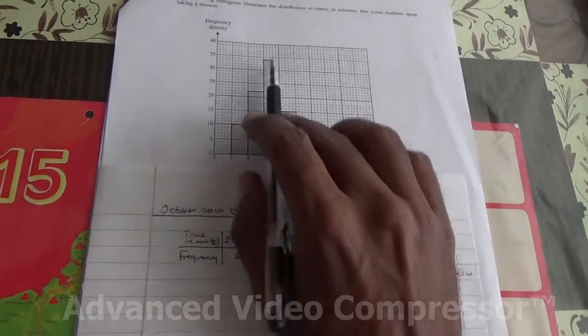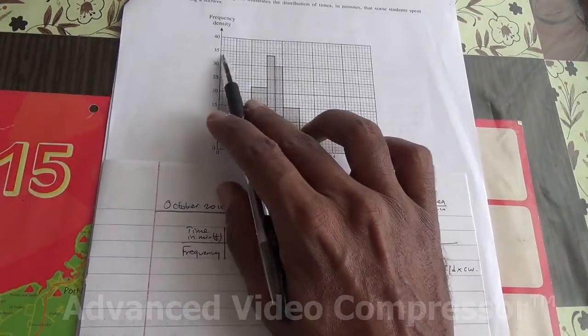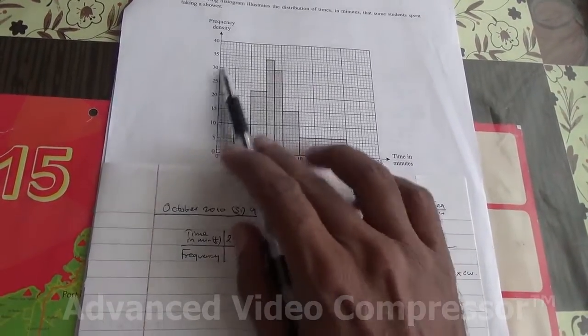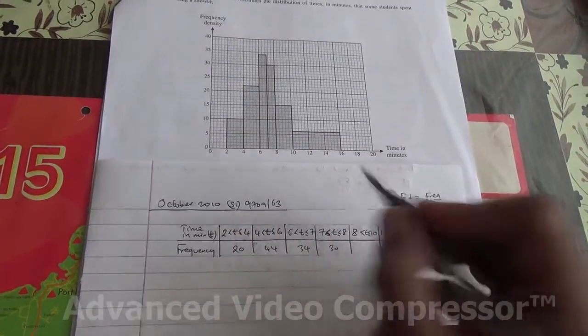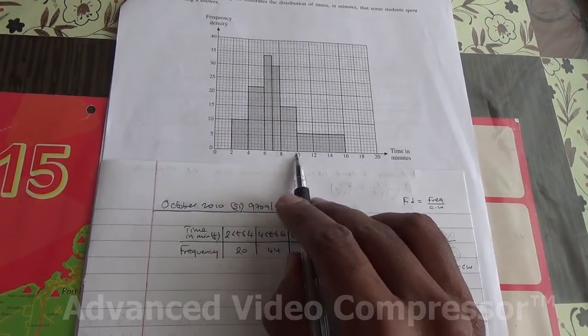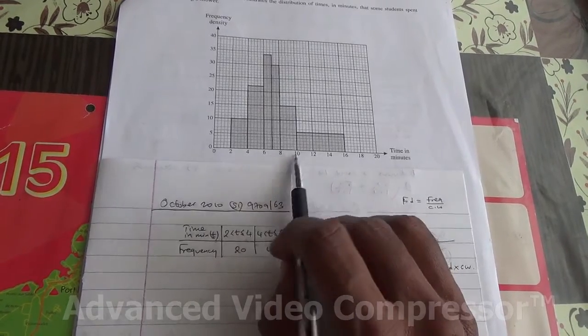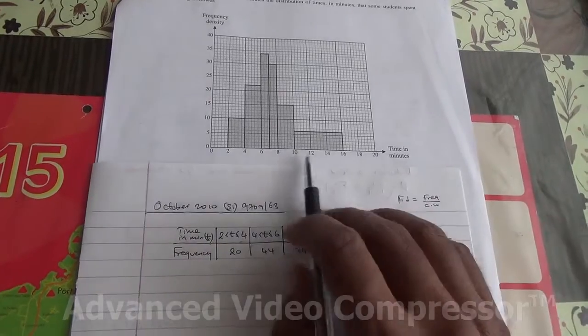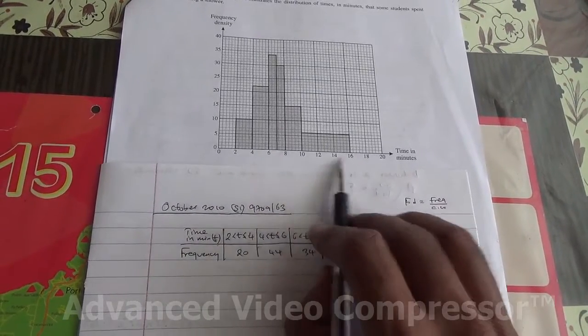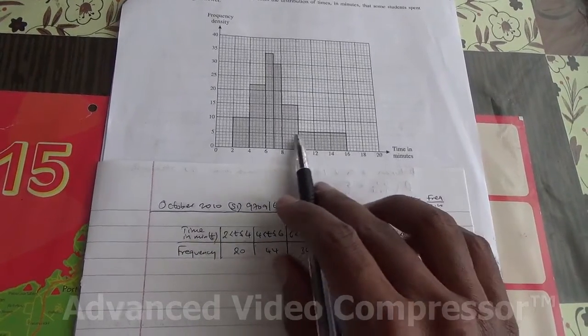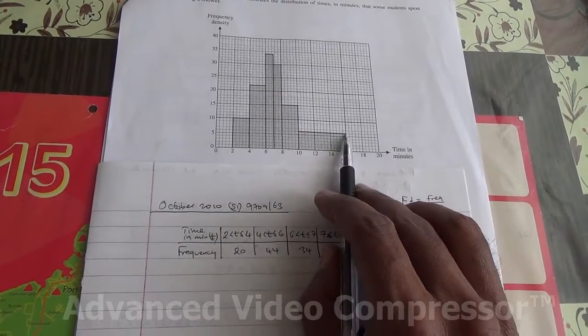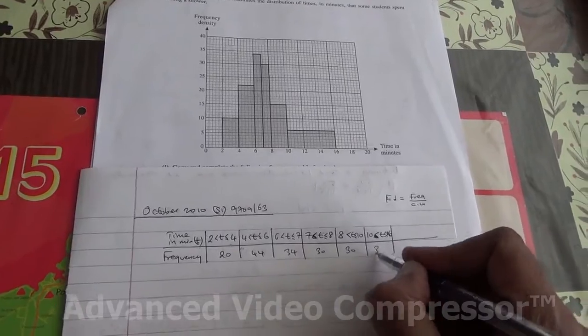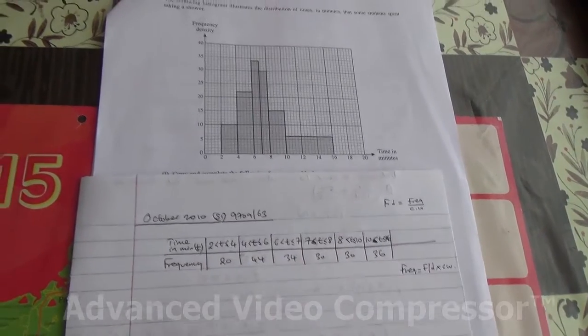Here it's going to be 1 times 34, so 34. The next one is 1 times 30. The next one is going to be 8 to 10, so that's going to be 2, the width, 2 times 15, that's going to give you 30. And then you've got 10 to 16, that is 6 times the height, which is 6. So 6 times 6 is 36. Now this is the table that has been completed.